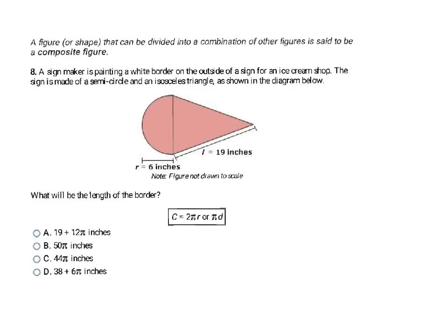Now we find the perimeter of a composite figure — a shape made from a combination of other figures. Here we have a semicircle (half a circle) and an isosceles triangle, shaped like an ice cream cone. A sign maker is painting the white border around the outside. Since it's an isosceles triangle, the two equal sides are both 19. We need the circumference of the semicircle plus the two triangle sides.